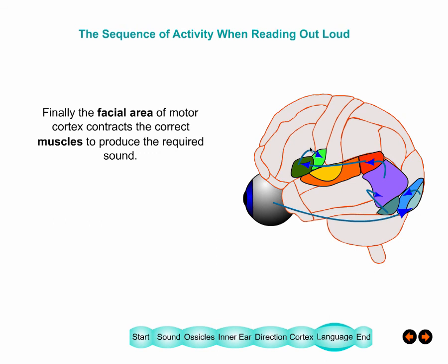From Broca's area you go to the facial motor area, which contracts the muscles of your lips, tongue, and lungs to project sounds at the right pitch and loudness.